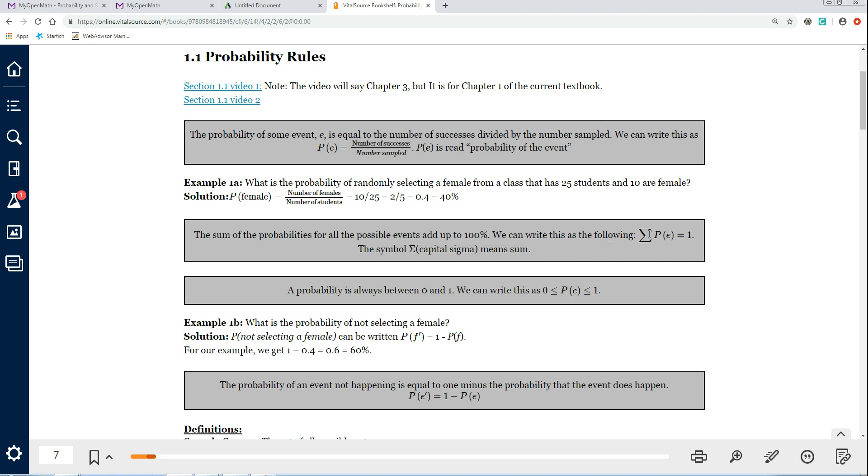And we can write this as the summation. This right here is a capital sigma. It's a capital letter S in the Greek alphabet. So this means sigma, or the sum, of all your probabilities add up to 100%. And 100% is the same as the number 1. So the sum of your probabilities always adds up to 100%. And again, this symbol right here, this Greek symbol, is called sigma. There's actually two sigmas, a capital sigma, which this one is, and a small case sigma. And you'll see that later on in the course. Small case sigma is used for population standard deviation.